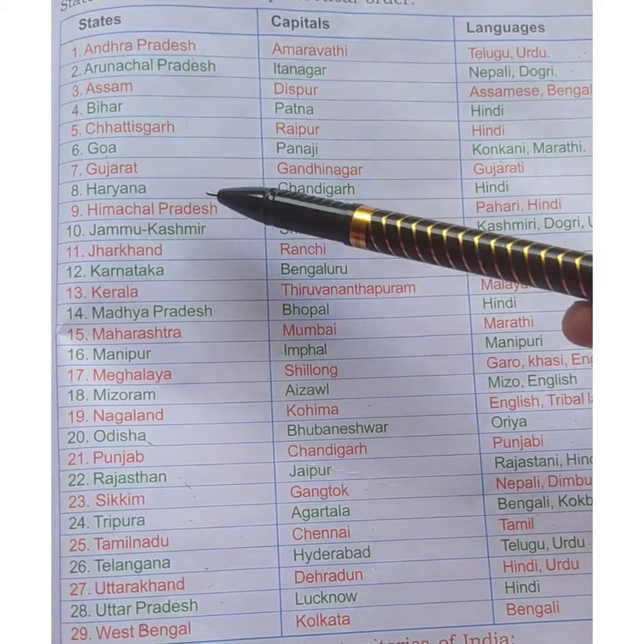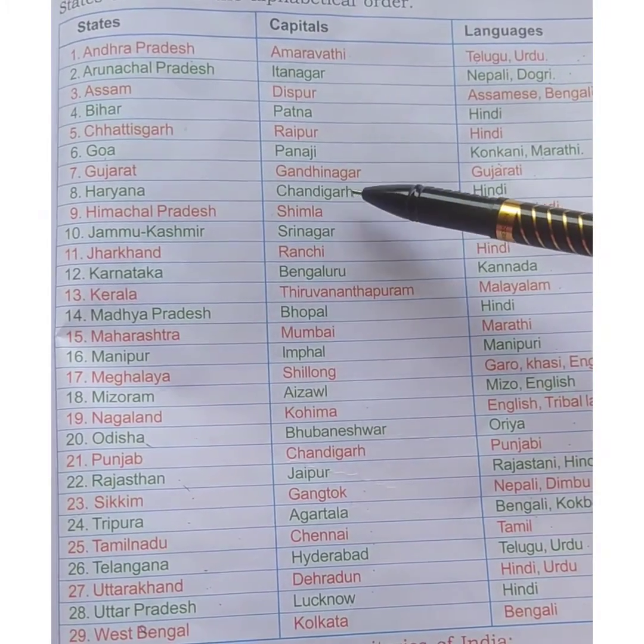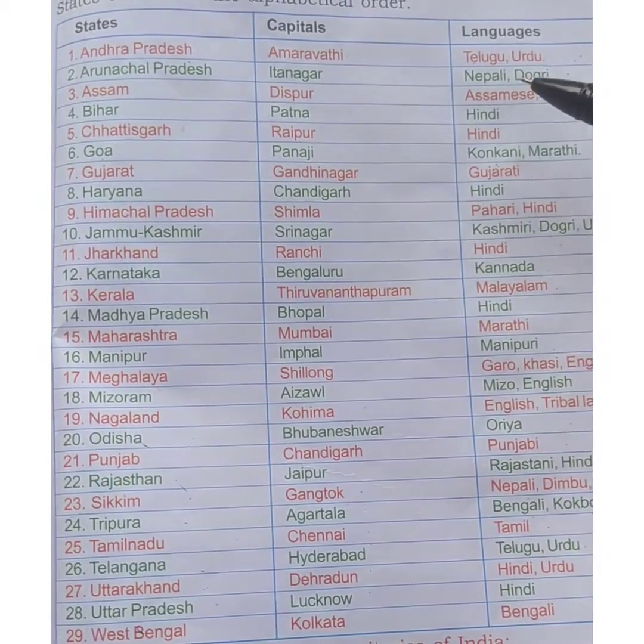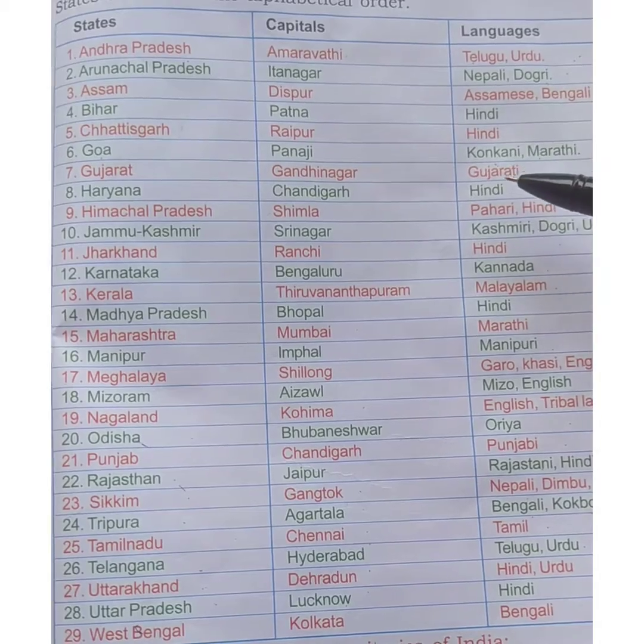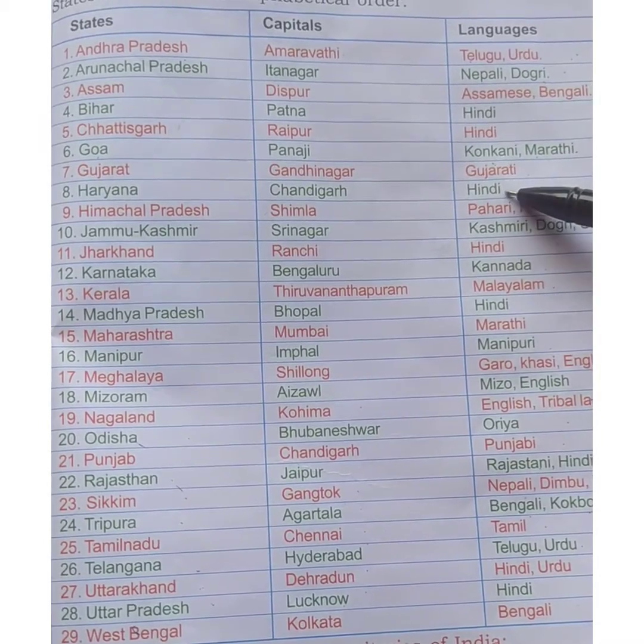Next is Haryana. The capital is Chandigarh. The language spoken is Hindi.